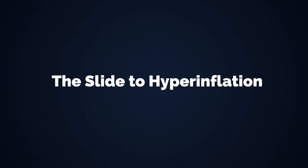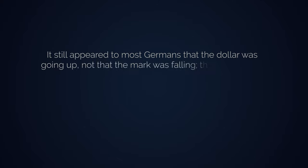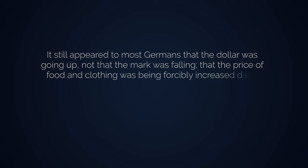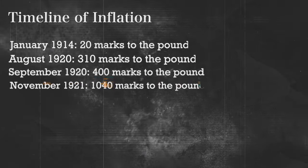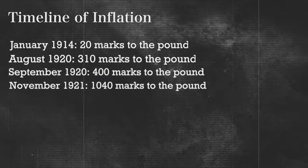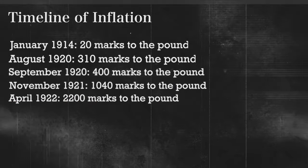Reading the book, it's remarkable to learn how people just didn't understand what was happening. It still appeared to most Germans that the dollar was going up, not that the mark was falling — that the price of food and clothing was being forcibly increased daily, not that the value of money was permanently sinking. Today the reaction of most people would probably be the same; more people complain about rising prices, which is more of a symptom, rather than their falling currency. In April 1922 the slide into hyperinflation became a real threat — the mark fell from 1,600 to the pound to 2,200 to the pound within a week.